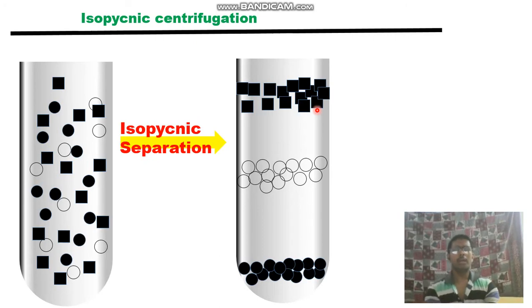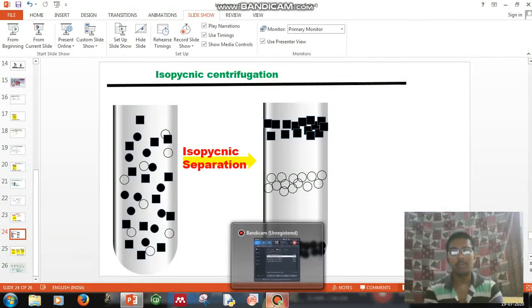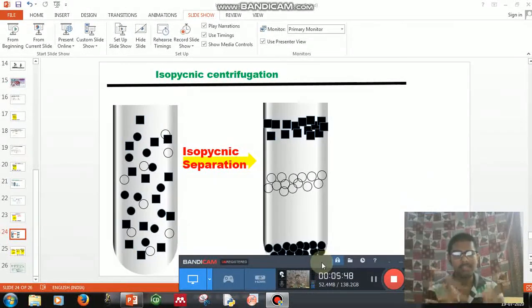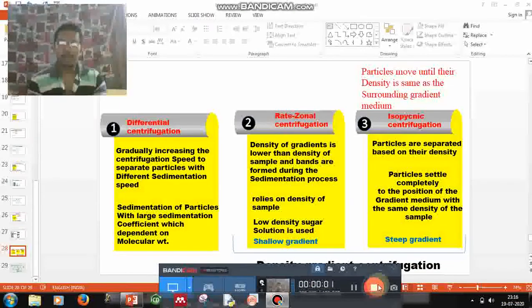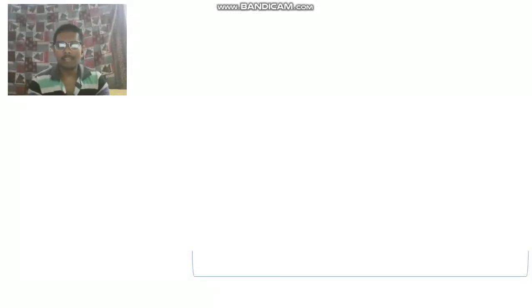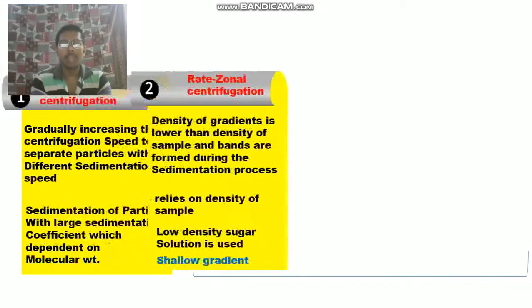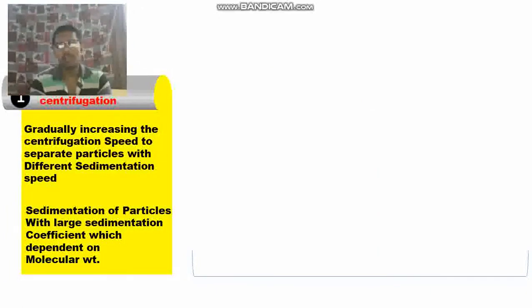That is the only difference between the two gradient types. So in isopycnic centrifugation, what makes it different from rate-zonal centrifugation is that it wholly depends upon density — particles accumulate exactly where their density equals the density of the gradient. To summarize: we have covered differential centrifugation, then rate-zonal centrifugation, and then isopycnic centrifugation.